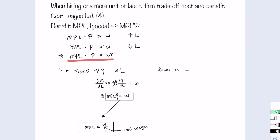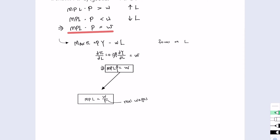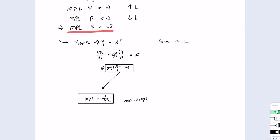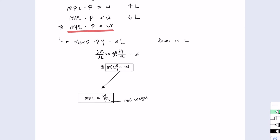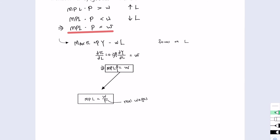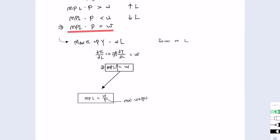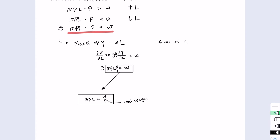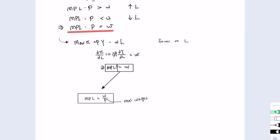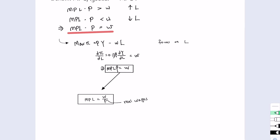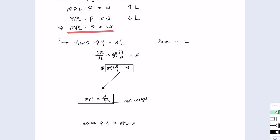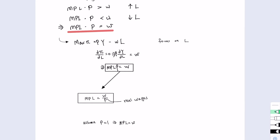You may ask: when solving profit maximization problems, sometimes we do not put P in front of Y — why is that? That is because when everything is denominated in units of goods, there is no relative price. But here, we want to emphasize that the wages in our daily life are in nominal terms. We can divide by the price level to get the concept called real wages, and the decision rule becomes: marginal product of labor equals the real wages. Alternatively, as long as price equals 1, we have marginal product of labor equal to the wage rate — it means the same thing.